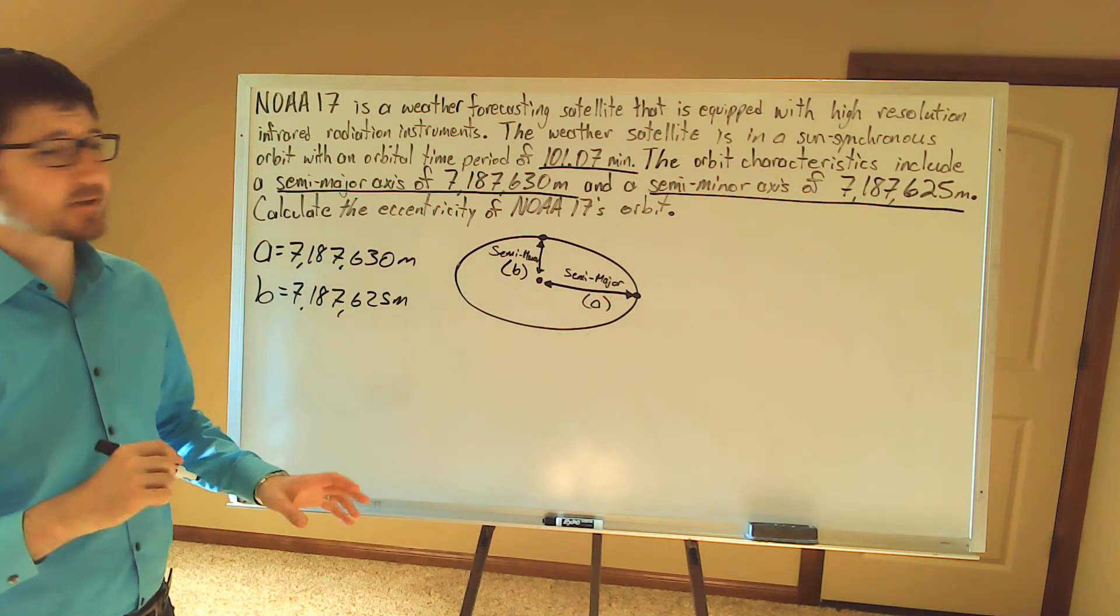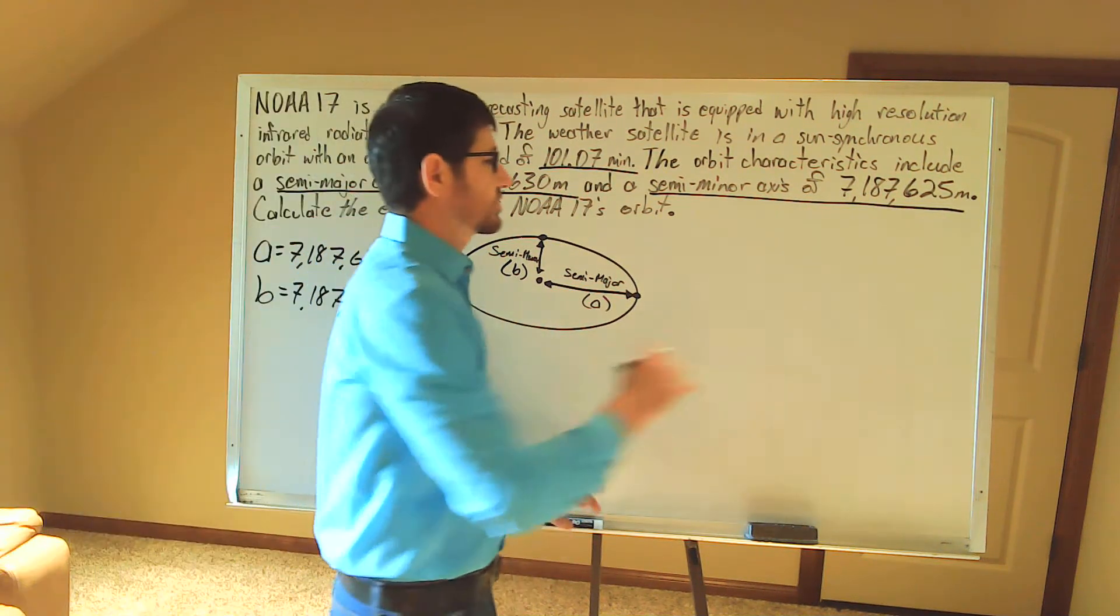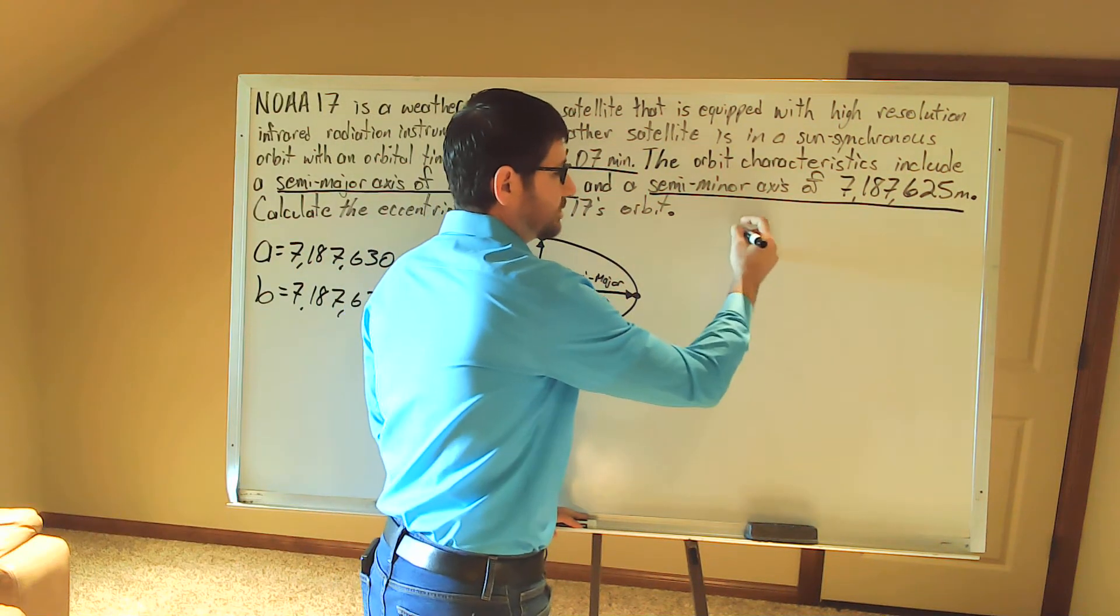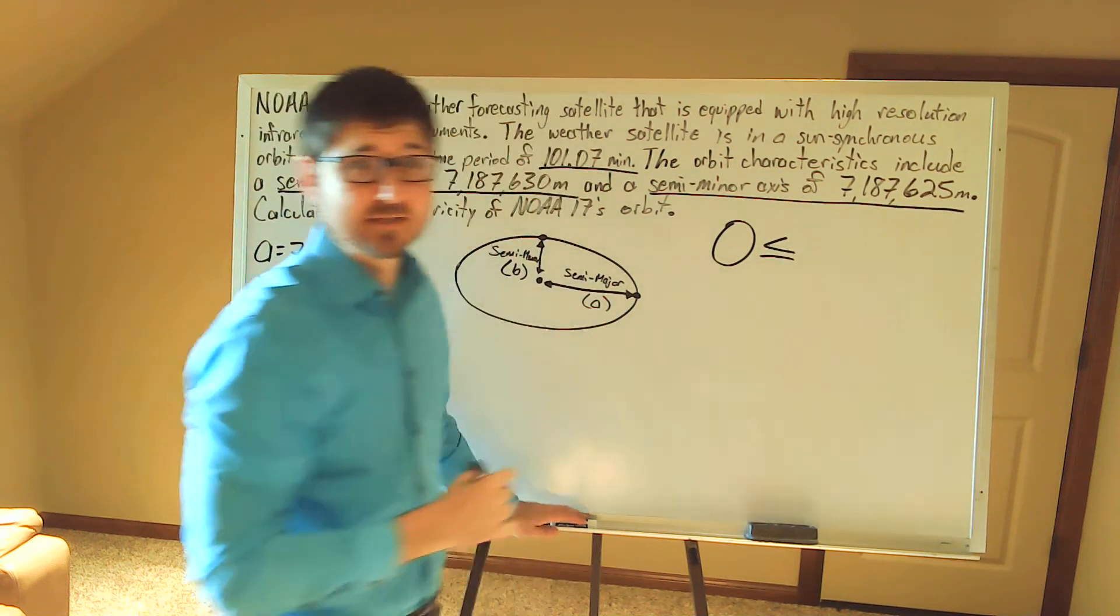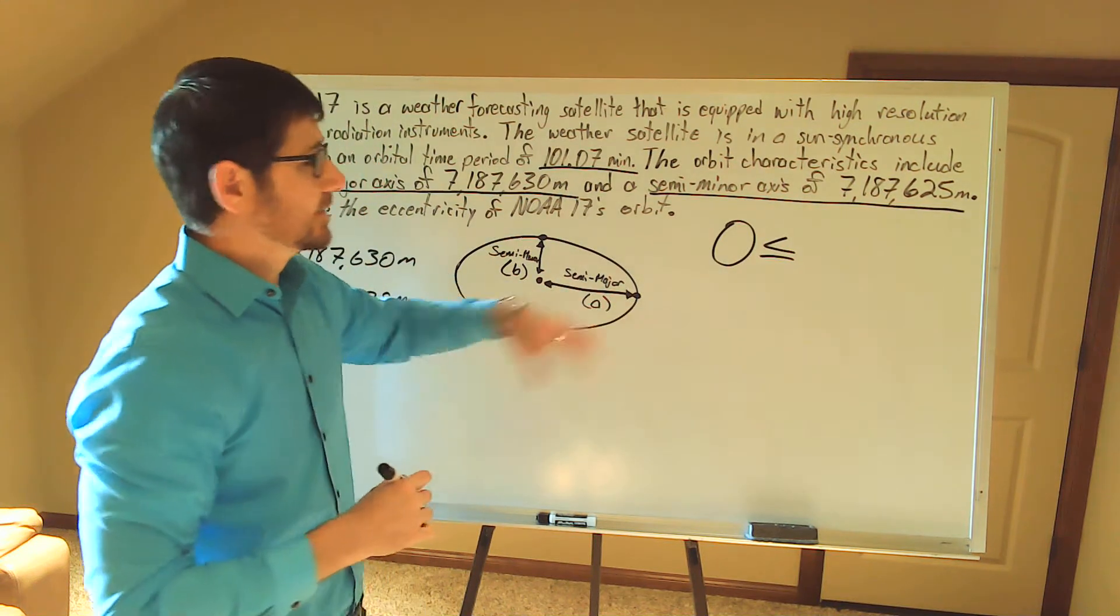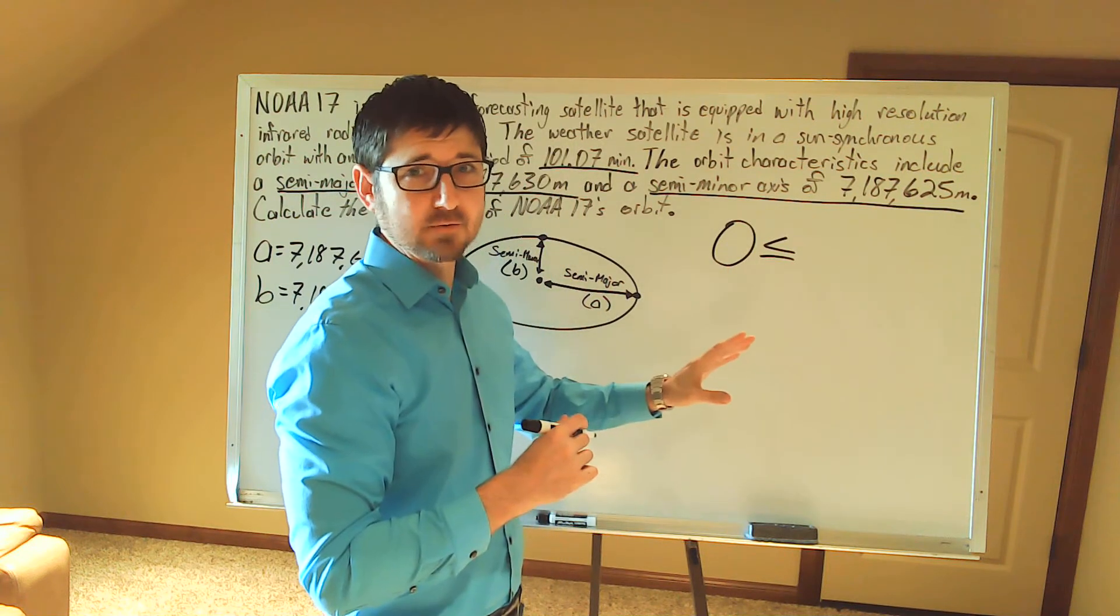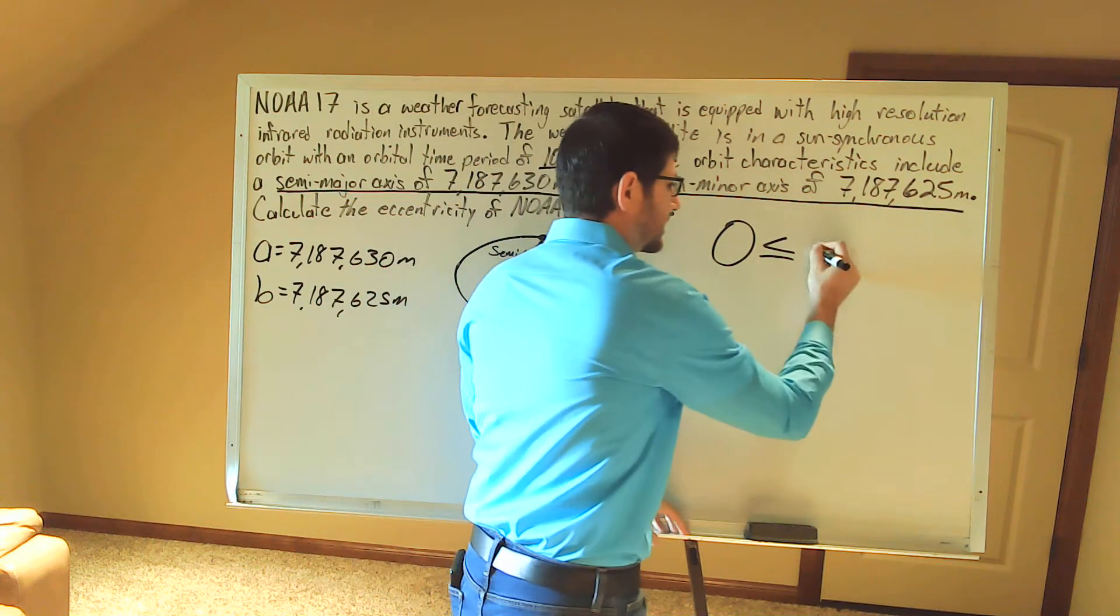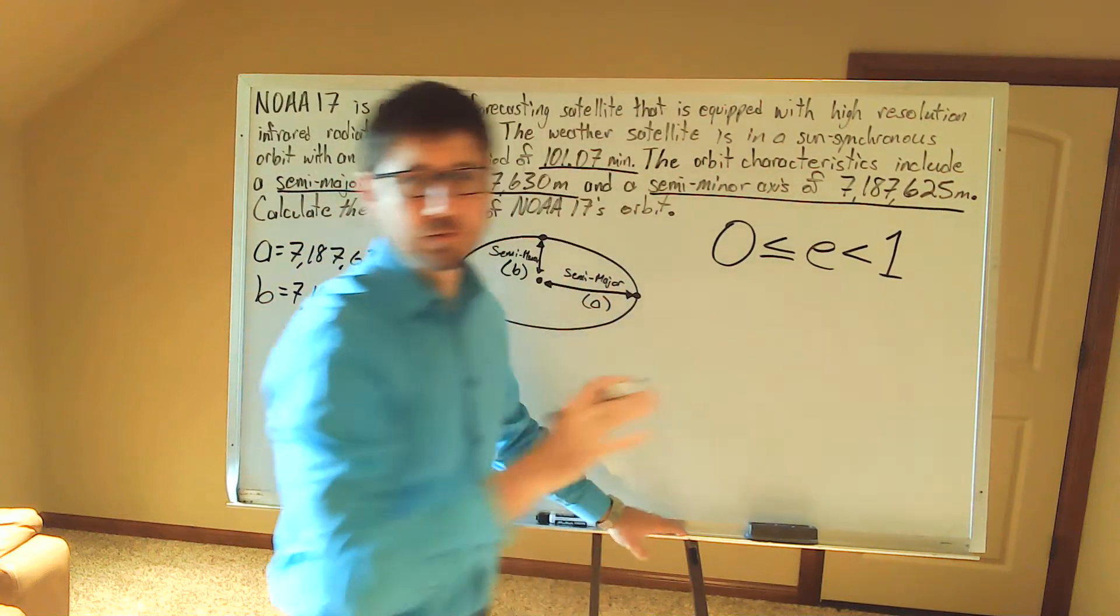And we're going to calculate the eccentricity of the ellipse. Now the eccentricity for an ellipse can be between zero and it can include zero. Now zero is going to be a circle, so it's going to have a constant radius, just a perfect circle, so it would be 0.0 for the eccentricity, up to one, but not including one.